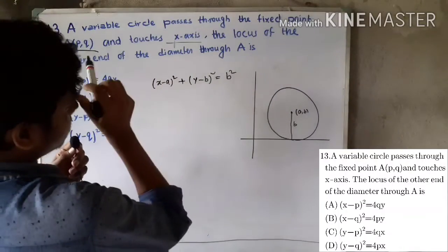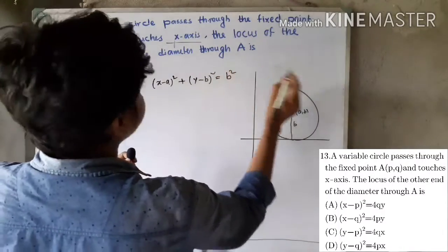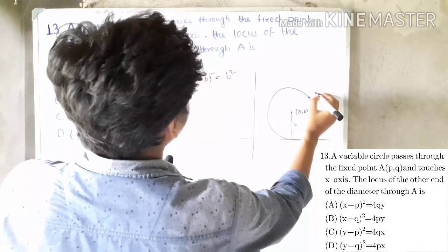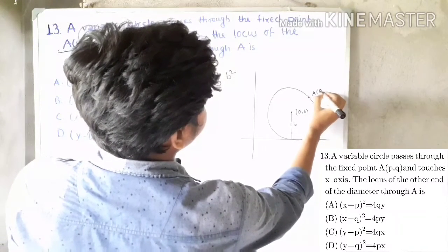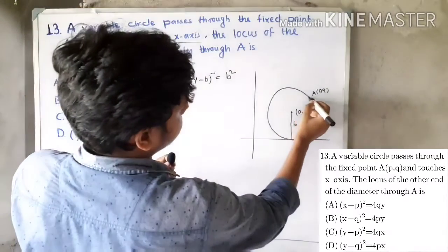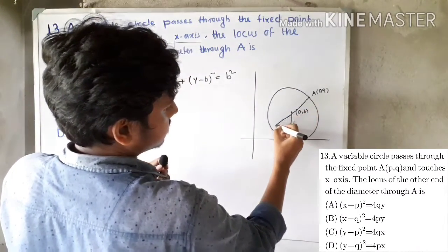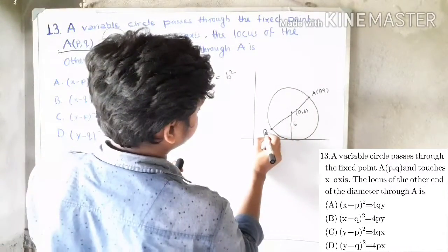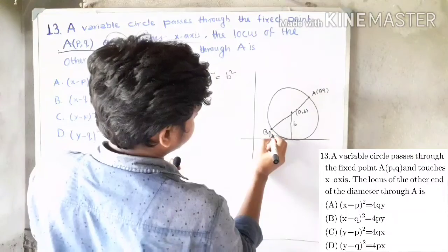The circle passes through point A with coordinates (p, q). A diameter is drawn, and we suppose the other end of the diameter is point B with coordinates (h, k).